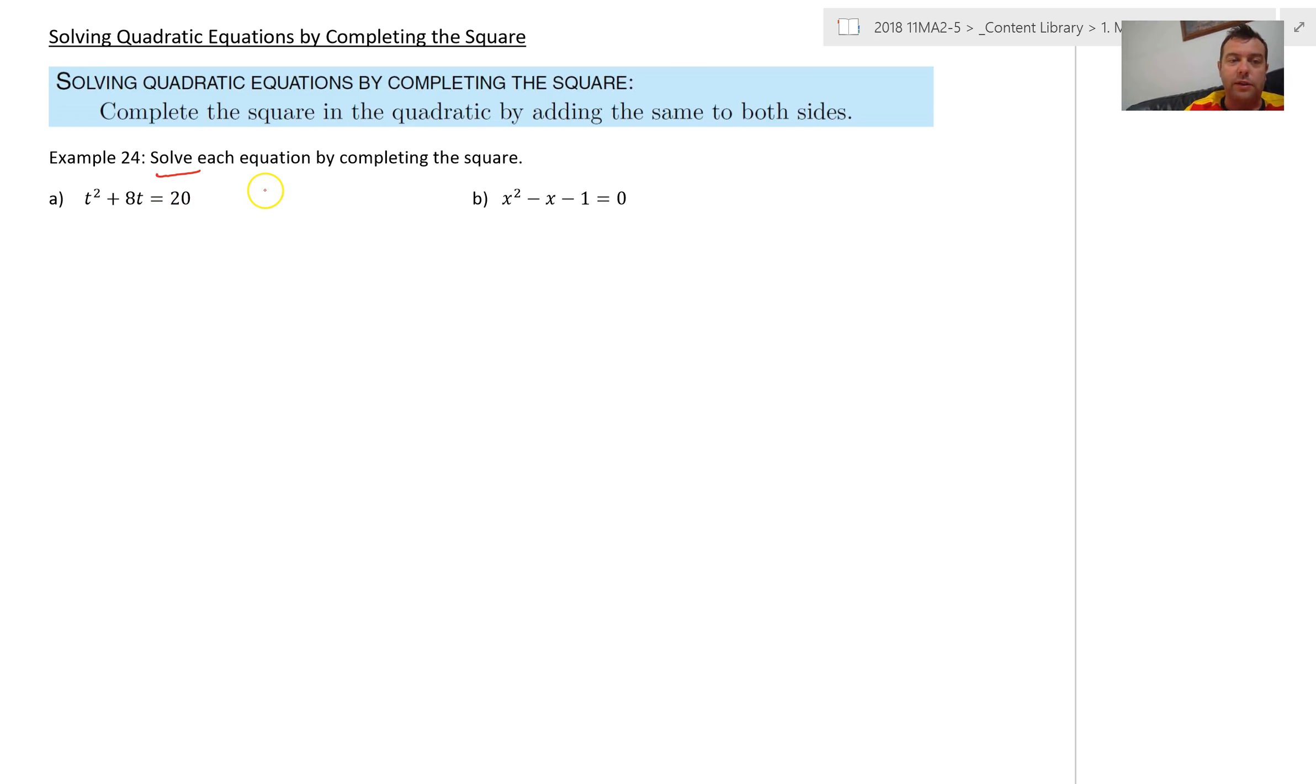So t squared plus 8t equals 20. Take the coefficient of the single power, so the t, half it. So I get t plus 4 all squared. There's my first square. Now that's going to introduce a 16, so I want to take 16 away there as well. Equals 20. If I expand this out, I get t squared plus 8t plus 16, then I do minus 16 equals 20, the 16s cancelling out. And I get back to where I was, so that's perfectly acceptable to write this. Now what I'm going to do is bring this 20 over this side, because often when we solve quadratics we want it to be equal to 0.